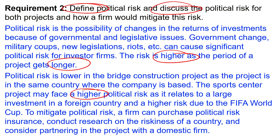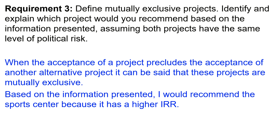To mitigate political risk, a firm can purchase political risk insurance, conduct research on the riskiness of a country, and consider partnering in the project with a domestic firm. Rather than coming in solely as an outside firm, having a relationship or partnership with a domestic firm in the target country may reduce political risk as well. That covers the second requirement.